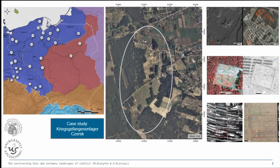Just to give you a small context of what I'll be talking about: a specific case study of a First World War camp now based in Poland, built by the Germans during the First World War. It was a part of around 108 prisoners of war camps built during that conflict. Nowadays in Poland we have around 30 of those sites as archaeological sites.